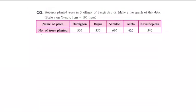Let's see another example: students planted trees in five villages of Sangli district. You have to make a bar graph of this data. You have been given a table and also the scale: y-axis one centimeter equal to 100 trees. Please pause the video here and try to solve this question by yourself, then we'll come back with the answer.